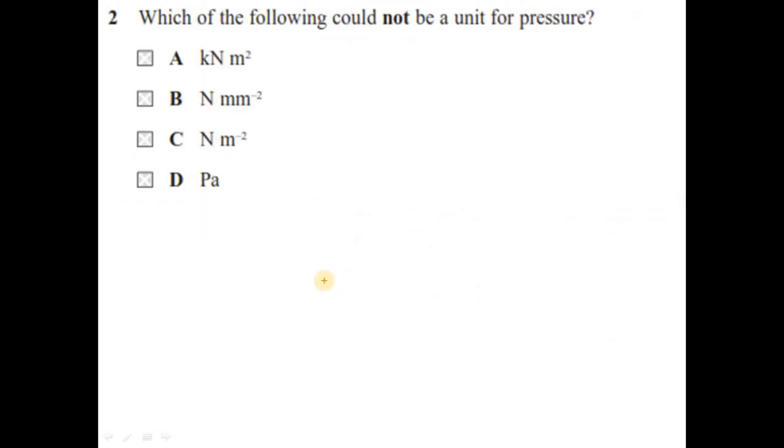Question number 2, which of the following could not be a unit for pressure? Pressure is force per unit area. That means unit of force divided by unit of area. Pascal is Newton per meter square or Newton meter minus 2. This is also a unit of pressure. Newton per millimeter square, again, this is force per unit area. Option A: kilonewton meter square. This is force into area. There is nothing to do with pressure with this relation. So kilonewton meter square could not be a unit of pressure. So your option is A.